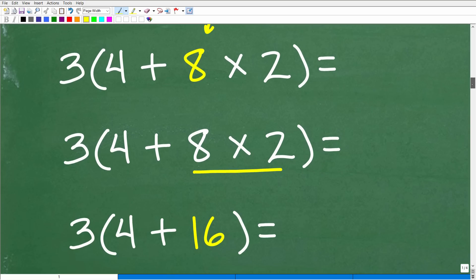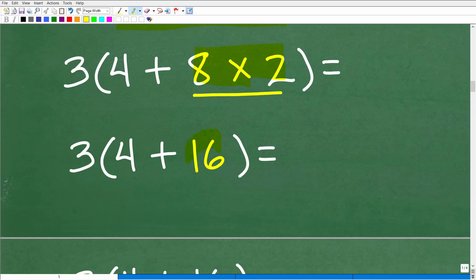So now our problem is three times. We're still working inside the parentheses. So we have four plus eight times two. So it's pretty obvious now that we have to do multiplication before addition. No issues there. So we have eight times two, which, of course, is 16. So we're still working inside the parentheses.